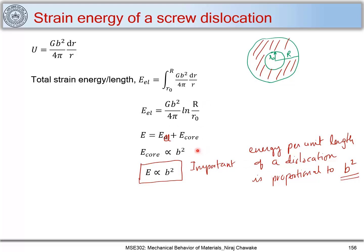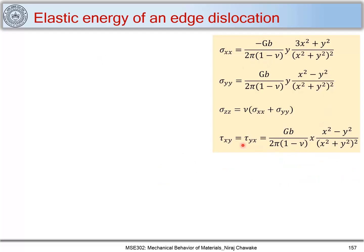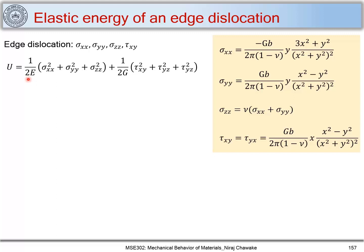Now let's consider the strain energy for an edge dislocation. For an edge dislocation, we have stress components σ_xx, σ_yy, σ_zz, and shear stresses τ_xy and τ_yx. Unlike a screw dislocation, an edge dislocation has both normal stresses and shear stresses. We follow the same approach and use the same elastic strain energy per unit volume formula: u = (1/2e)(σ_xx² + σ_yy² + σ_zz²) + (1/2g)(τ_xy² + τ_yz² + τ_xz²).